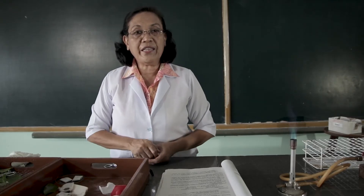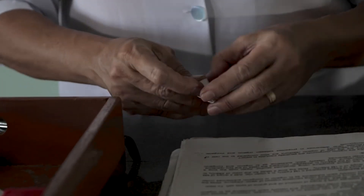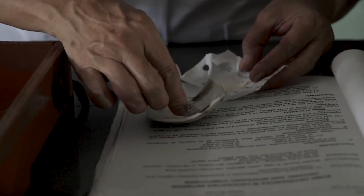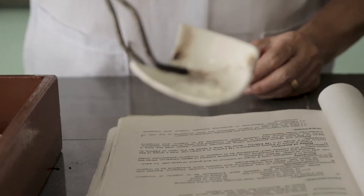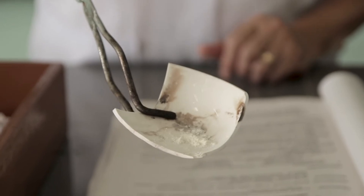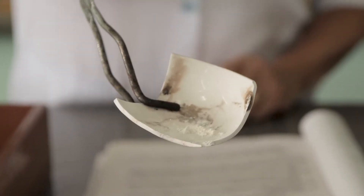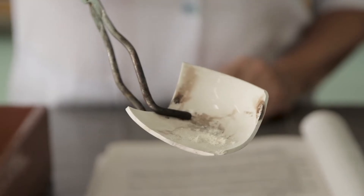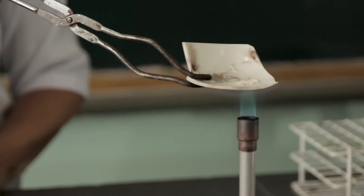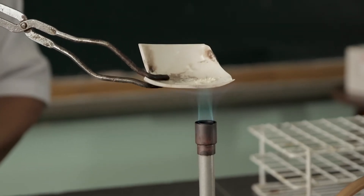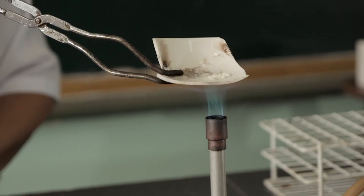Then we're going to heat a pinch of starch. This is the pinch of starch. I want you to observe the color before it is being heated. So let's heat it over the flame and observe what happens to the color.